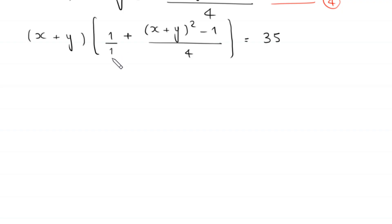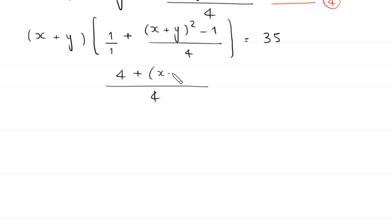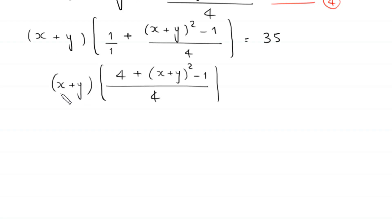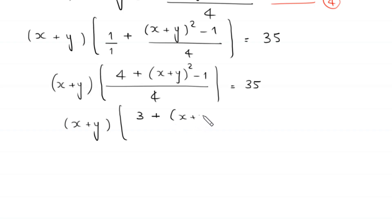We write 1 with denominator 4, take the LCM of 1 and 4, which is 4. So 4 times 1 gives 4, and together with x plus y whole squared minus 1, the bracket becomes 4 plus x plus y whole squared minus 1, giving 3 plus x plus y whole squared. Then x plus y times 3 plus x plus y whole squared divided by 4 equals 35.